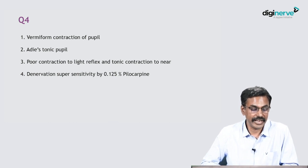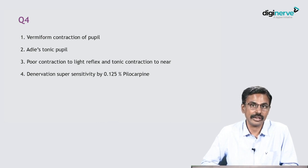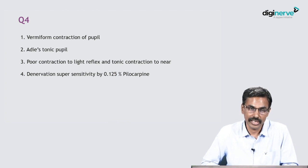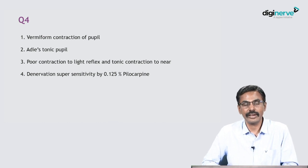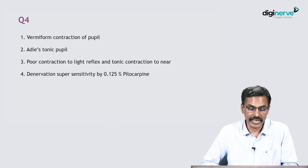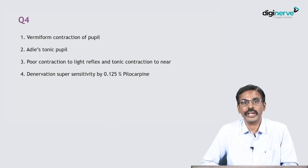The likely diagnosis is Adie's tonic pupil. Other ocular findings include poor contraction to light reflex and slow tonic contraction to near reflex — a light-near dissociation, meaning it does not react well to light but will slowly react to accommodation. To confirm, we test using denervation supersensitivity with very weak dilute pilocarpine, 0.125% pilocarpine. Commercially it is available as 2% pilocarpine and you dilute it 8 times — take 0.5 ml.